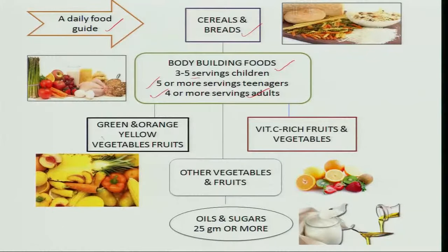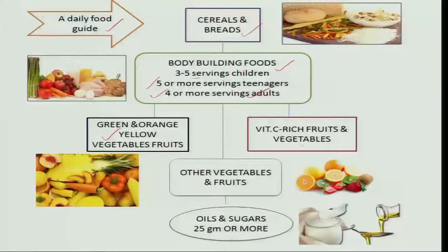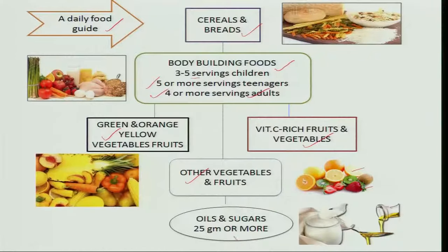After that, always look for green, orange, or yellow vegetables and fruits because they are rich in vitamin A and vitamin C, and you get most of the minerals and vitamins from them. Then select foods rich in vitamin C like citrus fruits and green chillies, which also have sufficient vitamin C. After that, select other vegetables and fruits to cover all remaining minerals and vitamins. The last thing to add in meal planning is fats and sugars — these should be a maximum of 25 grams, not more than that.